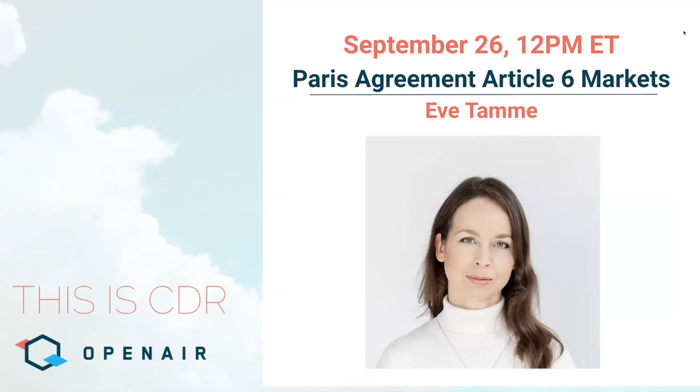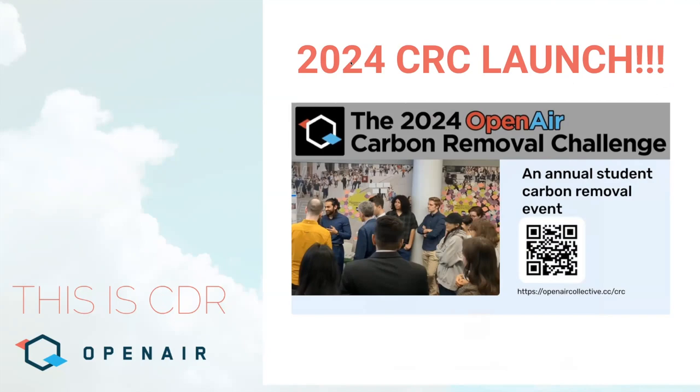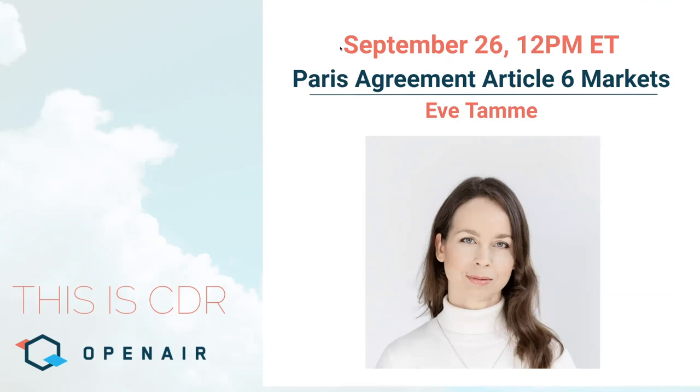This week we have with us Eva Tamer, who is a climate policy expert, as well as the founder and managing director of Climate Principal. She's going to discuss the ongoing deliberations on carbon markets under Article 6 of the Paris Agreement, as well as their critical implications for the future of CDR. Our format today will be a discussion between Eva and Open Air's Toby Bryce, followed by moderated audience Q&A. Please type questions into the Q&A box, not the chat.